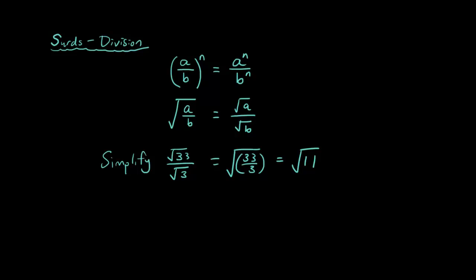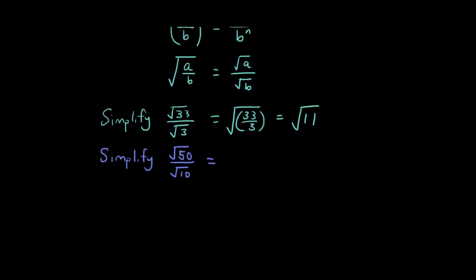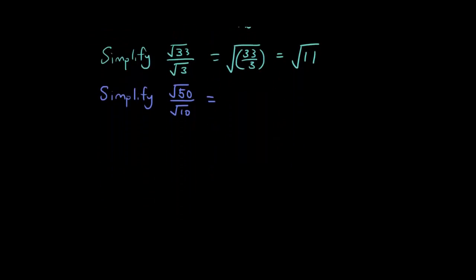I'll give you guys another one to try: simplify the square root of 50 over the square root of 10. Have a go at this and come back when you're done. The answer is square root of 50 divided by 10, and 50 divided by 10 is 5. So the answer is the square root of 5. Pretty simple.